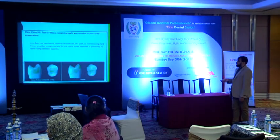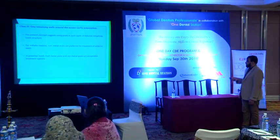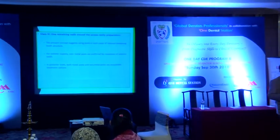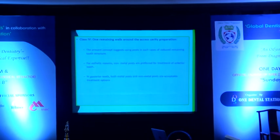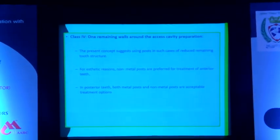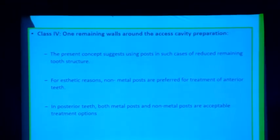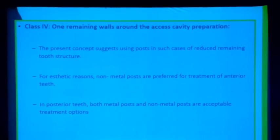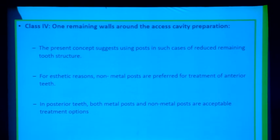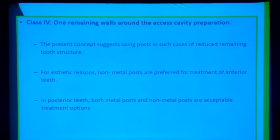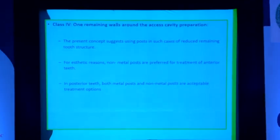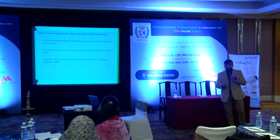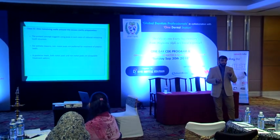For Class 1, 2, and 3, a core with or without a crown suffices. If it is Class 4 — where only one wall is missing — then a post is required. You have to place a post. Mostly a fiber post is indicated if you have 2 mm of crown structure above the free gingival margin.